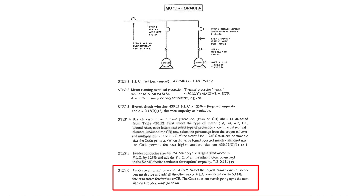Feeder overcurrent protection, NEC 430.62, says: select the largest branch circuit overcurrent device — highlight 'largest branch circuit.' Then add all the other motor FLC values connected to the same feeder to select the fuse or circuit breaker.